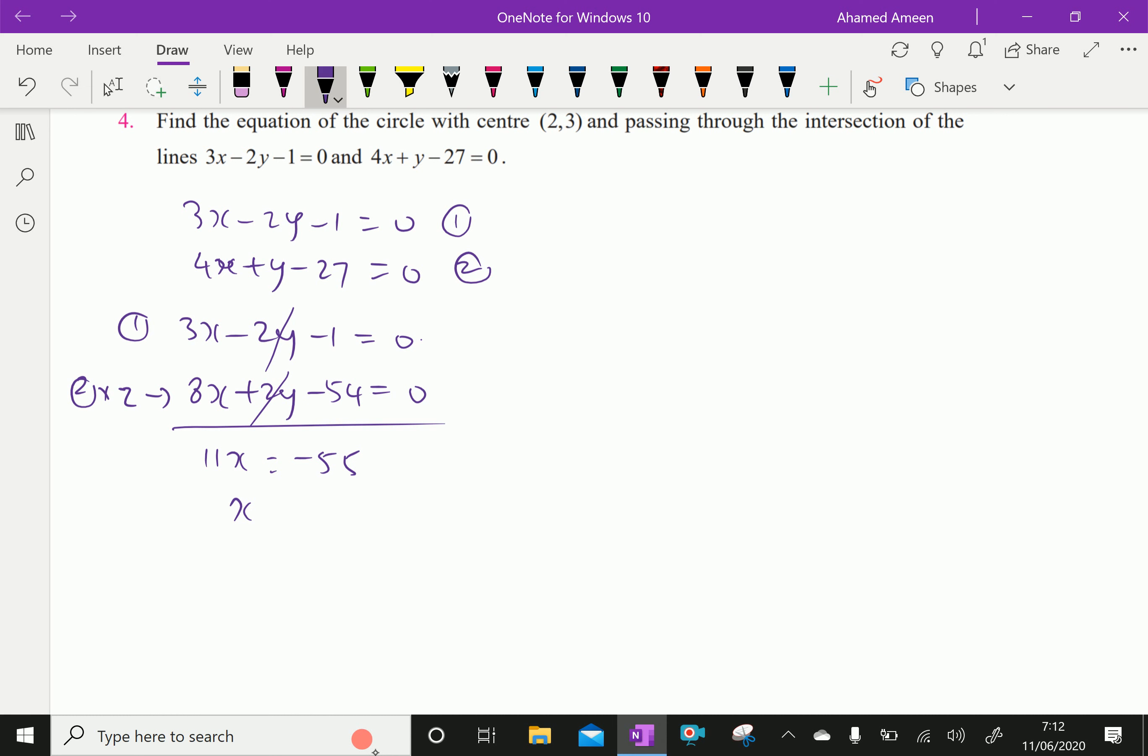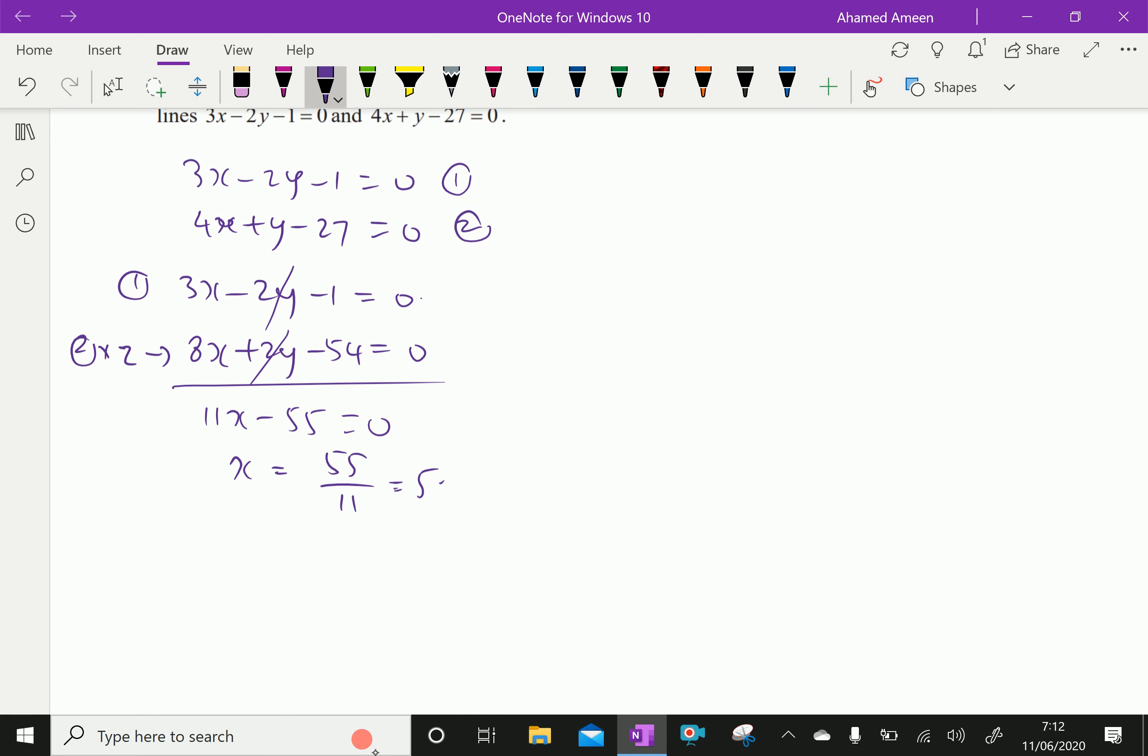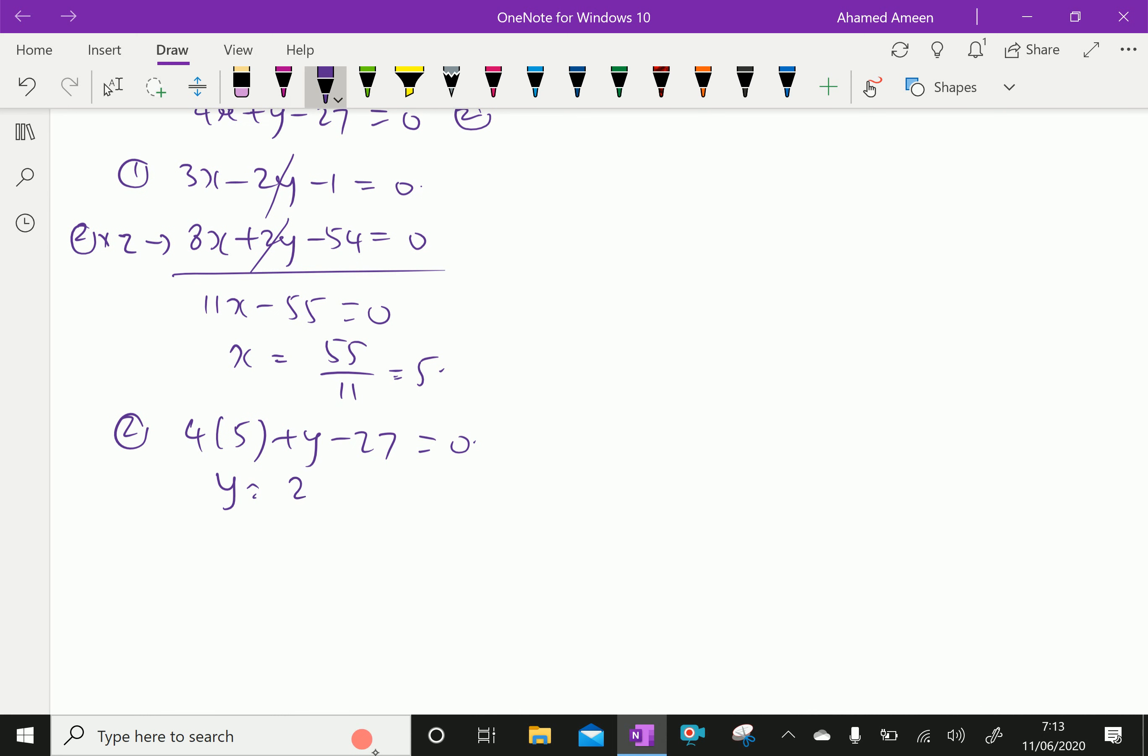Therefore, 11x minus 55 equal to 0. Then x equal to 55 over 11 equal to 5. Now, substituting in the first equation or second equation, 4 into 5 plus y minus 27 equals 0. Therefore, y equals 27 minus 20, so 20 goes to that side as minus 20 is 7. Therefore, the point of intersection of this line is (5,7).